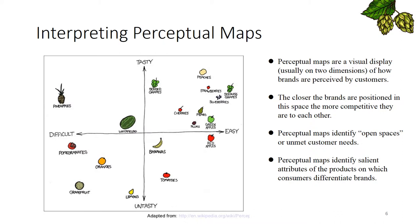Miss Kate then thought about how to interpret perception mapping. First, the closer the brands are positioned in the space, the more competitive they are to each other. Second, it identifies open spaces or unmet customer needs, and salient attributes of products.